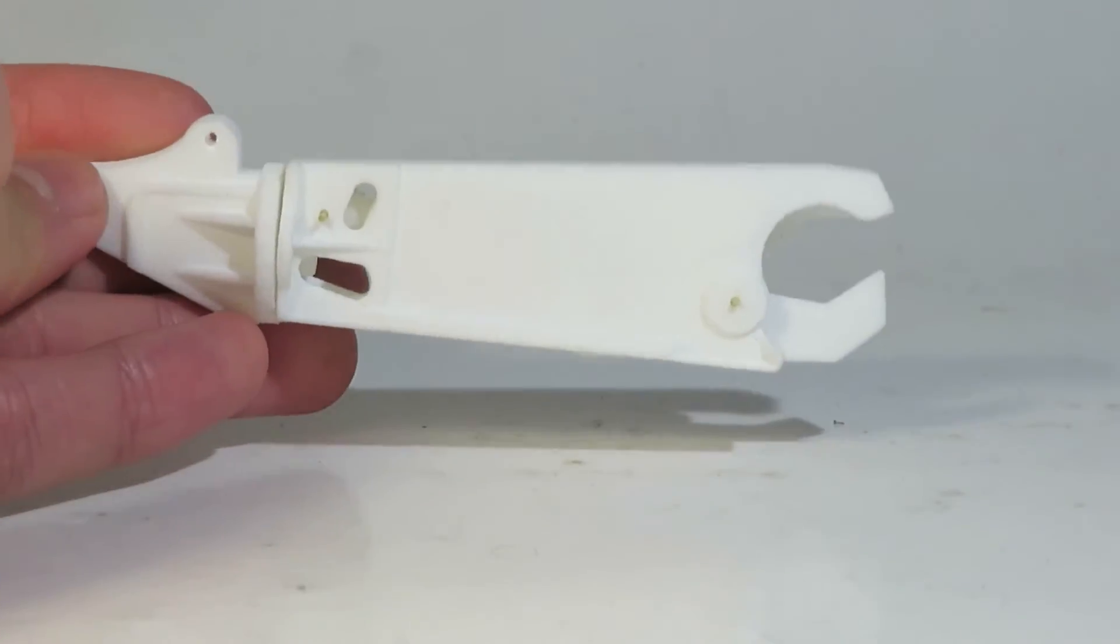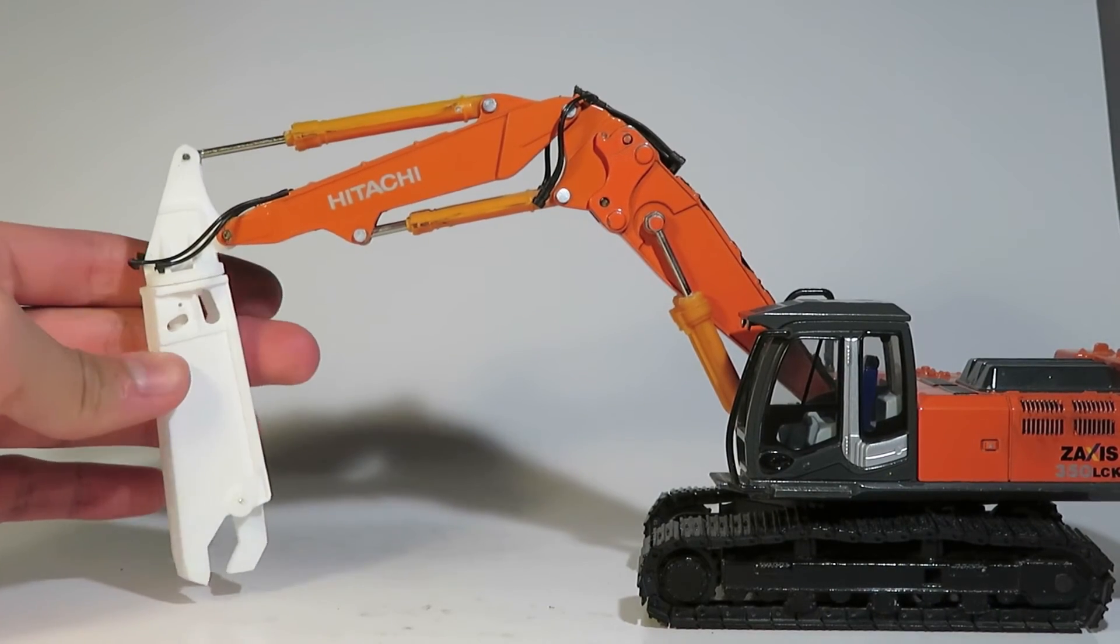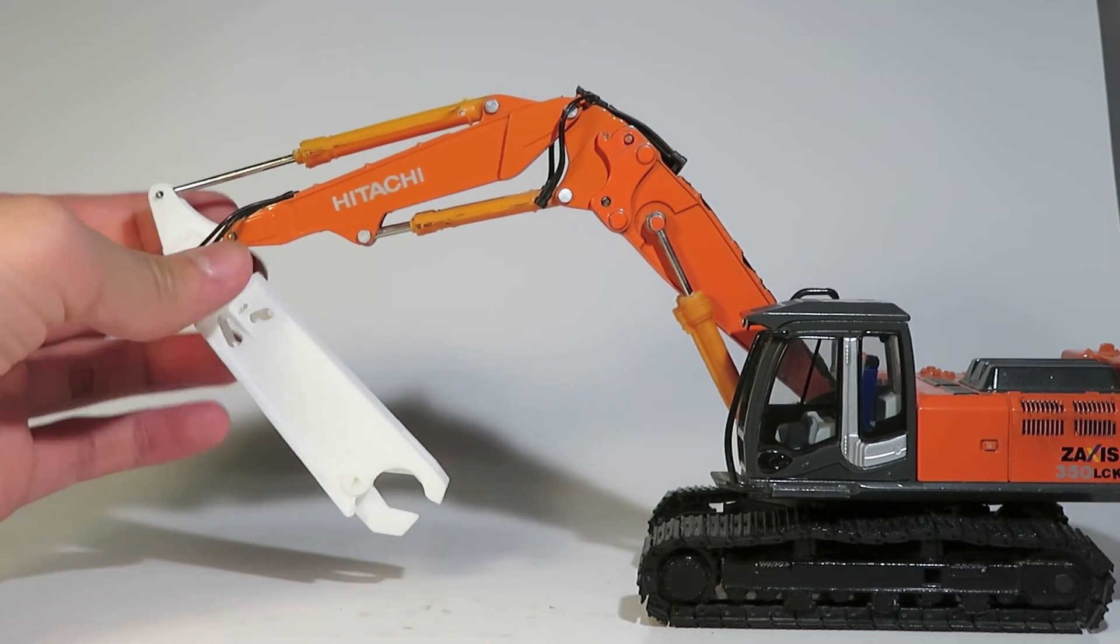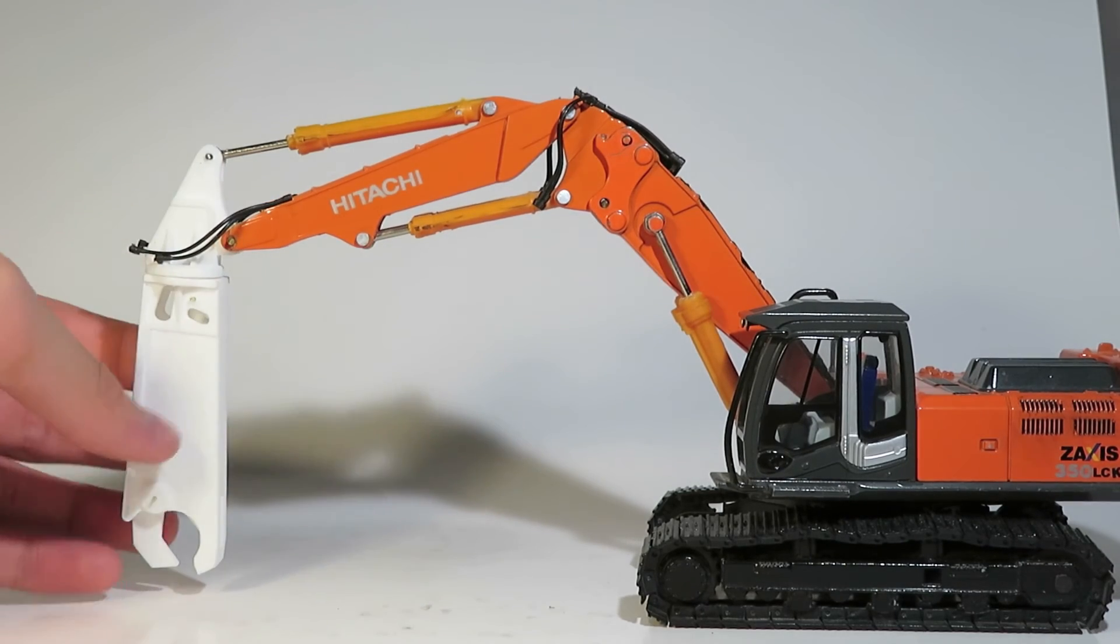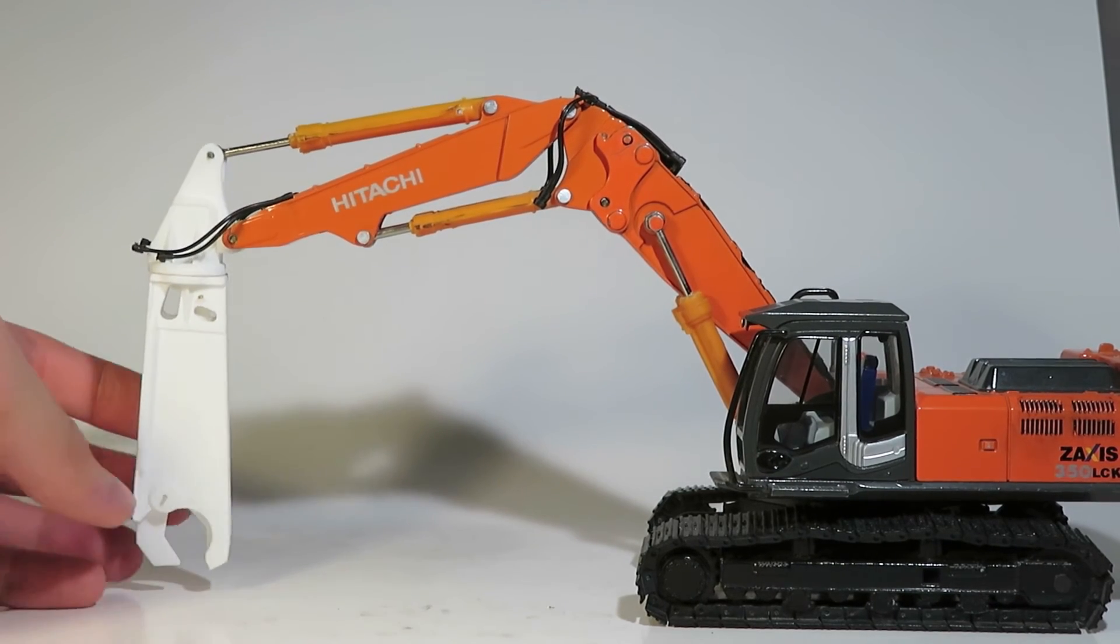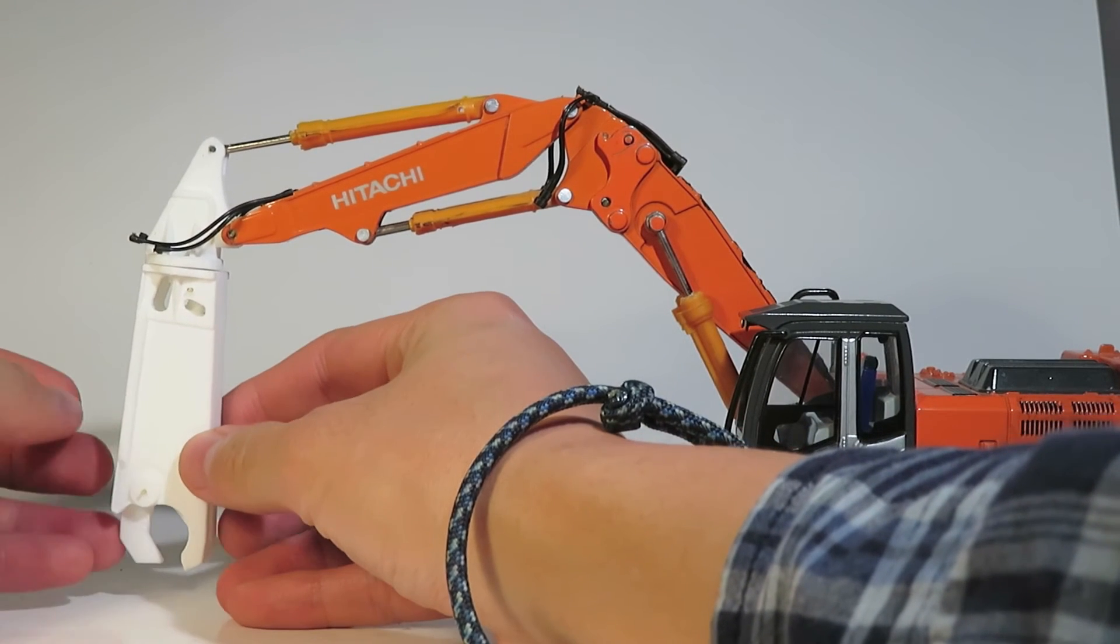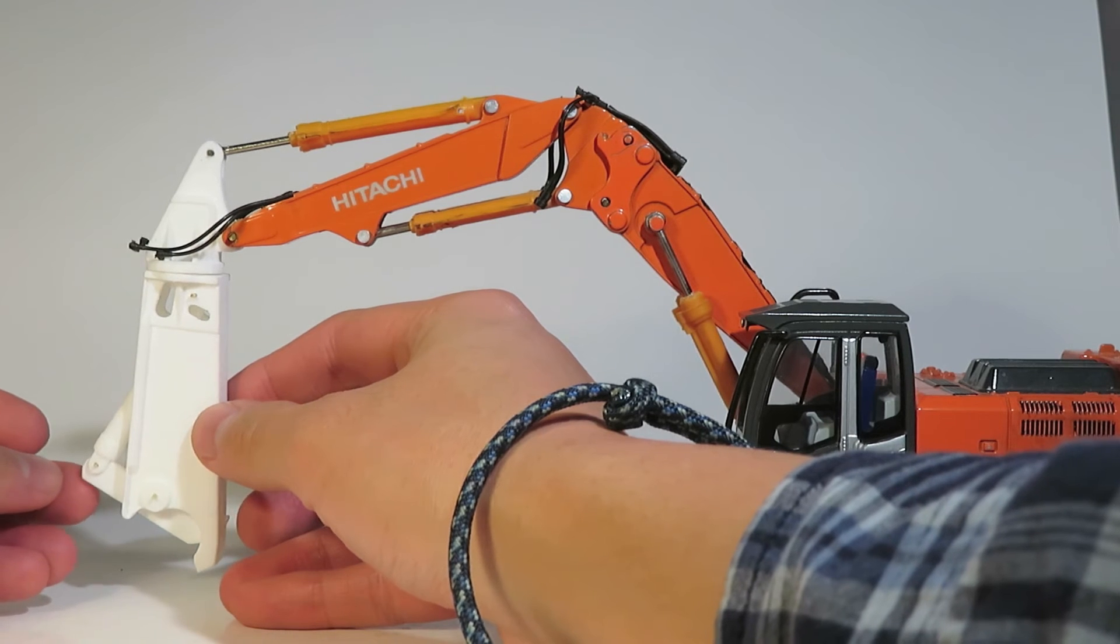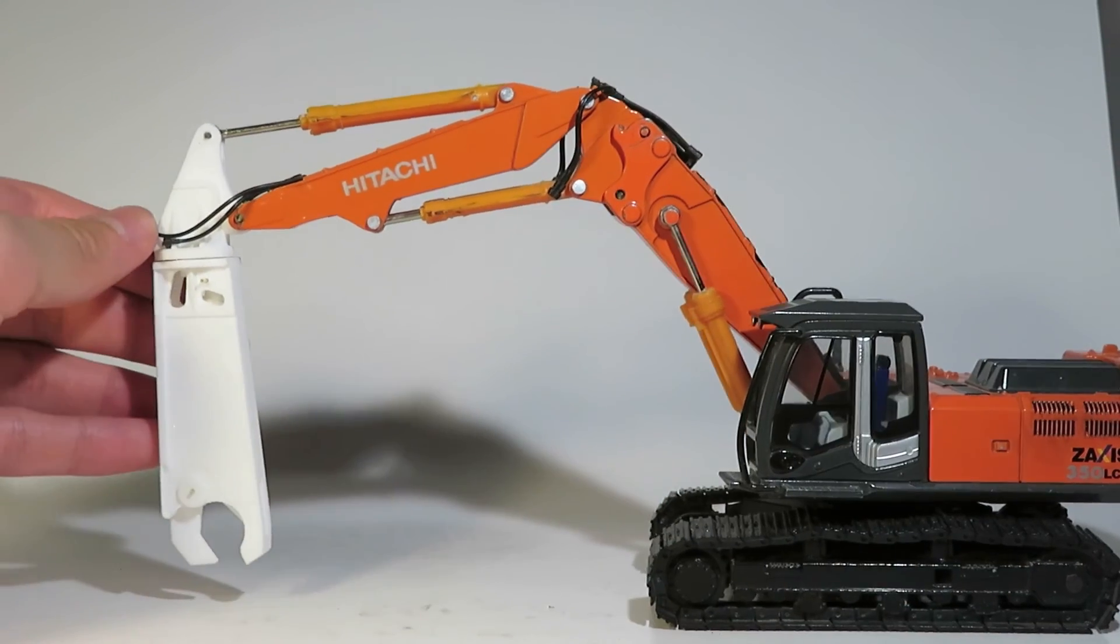Now let's get the shear mounted up on a 35 ton excavator. As you can see, the shear can rotate 360 degrees, follows the full range of movement as a normal stick would, and the cutting edge opens up this far and goes in this far to a full closed position. So the range of motion is pretty decent on this.